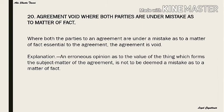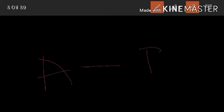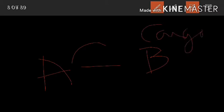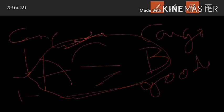Without wasting time, we start our new section — Section 20. Section 20 deals with agreement void where both parties are under a mistake as to a matter of fact. If both parties make a mistake as to a matter of fact, the agreement is void. For example, Mr. A and Mr. B entered into an agreement for selling cargo goods now in England, say India. This kind of agreement is void.